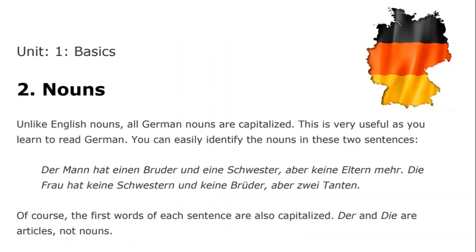The first grammatical topic we'll consider here is nouns. Unlike English nouns, all German nouns are capitalized. There's the old joke of a student reading a text in the original German in a philosophy class who sees the word 'Sein' — 'Being' with a capital S — and concludes they must be talking about the ultimate being who is, of course, God. Well, the professor says no: in German, all nouns are capitalized, even if they're not that important.